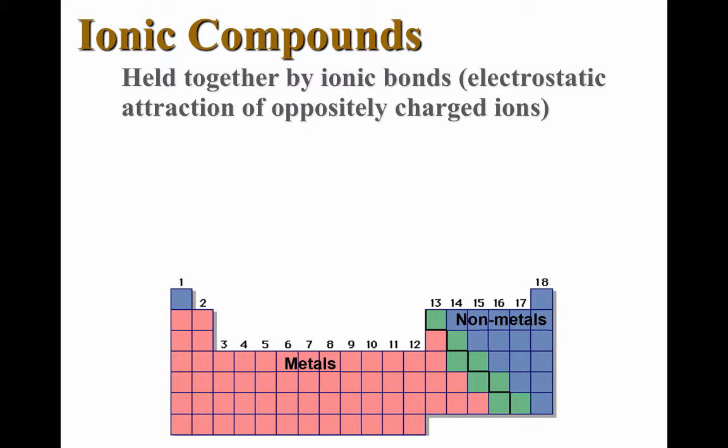And as we know, if there's something positive and something negative, they will attract each other. An ionic compound forms when you have a metal, something from the left side of the periodic table, bonded to a nonmetal, an element from the right side.